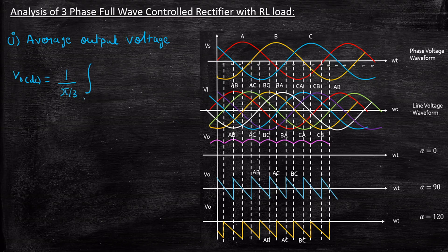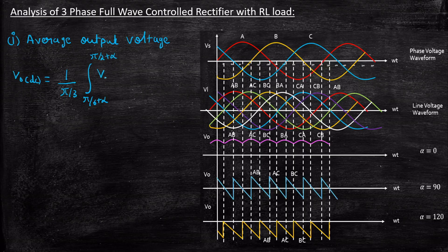The integration lower limit is pi by 6 plus alpha, as the minimum firing angle for triggering will be at that point. The upper limit is pi by 2 plus alpha, because it conducts for 60 degrees before the next cycle starts. So we are considering only one cycle for the average output voltage calculation. The integrand is VAB d(ωt). Once you know how to write these upper and lower limits considering the total time period, the rest is straightforward mathematically.